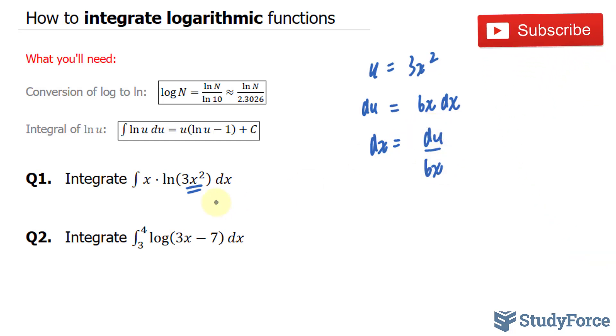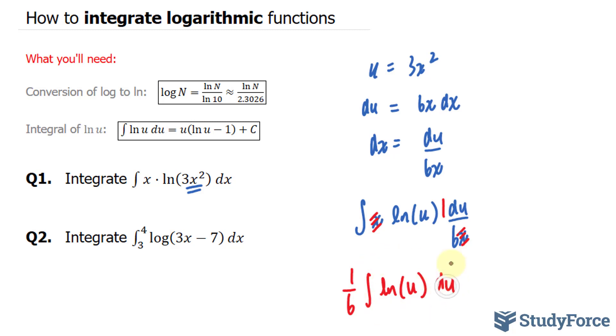What I'll do next is substitute this into here. I have the integral of x times ln u, and instead of dx, I'll place that du over 6x. This x and this x will cancel out. I'll take this 1 over 6 outside of the integral, ln u du. I know the integral of this.